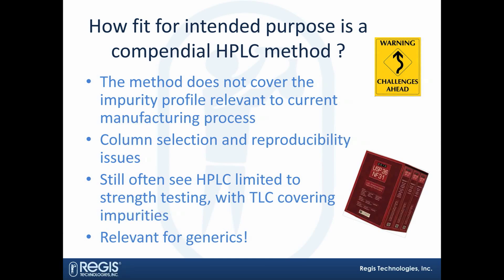The USP monographs tend to describe columns for HPLC methods in a very categorical manner. The method may say: use a C18 column. As chromatographers would know, there could be hundreds of C18 columns out there, each with their own proprietary specificity and selectivity. Which one do you use? You have to try it out. You can't just hope to use a USP method once, try it, and say it's good — you need to challenge it.